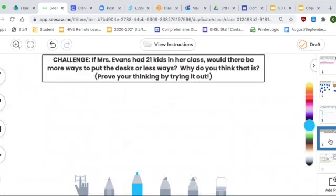Slide four is a challenge. If Mrs. Evans had 21 kids in her class, would there be more ways to put the desks or less ways? Why do you think that is? So this is a two-part problem. One, would there be more ways or less ways? Explain your thinking. Why do you think there are more ways or why do you think there are less ways? Show your thinking, try it out.